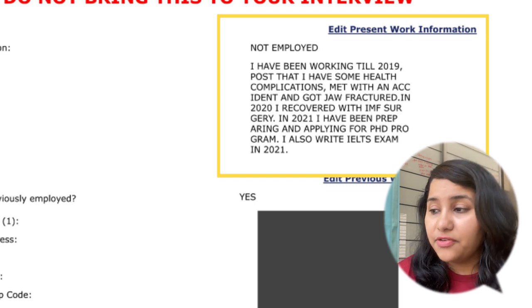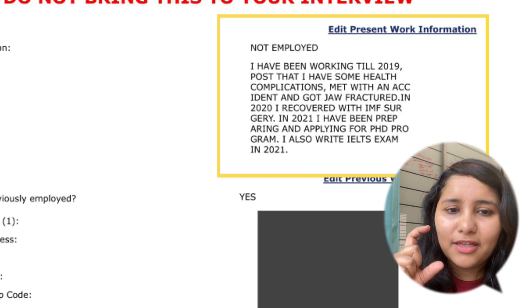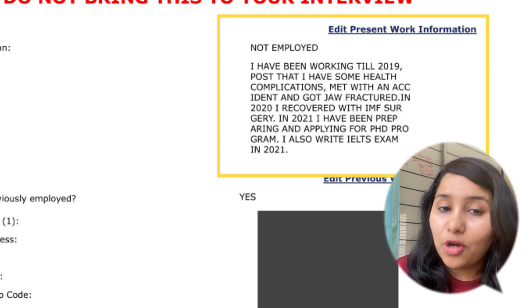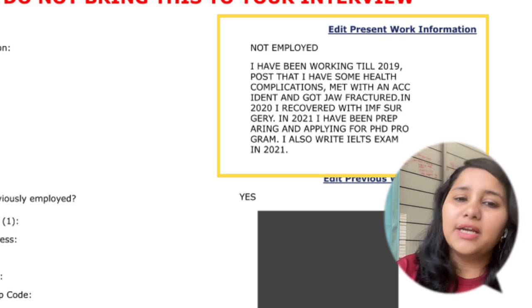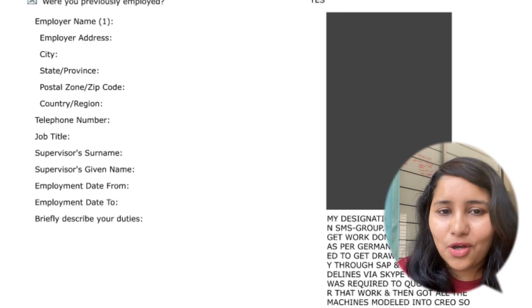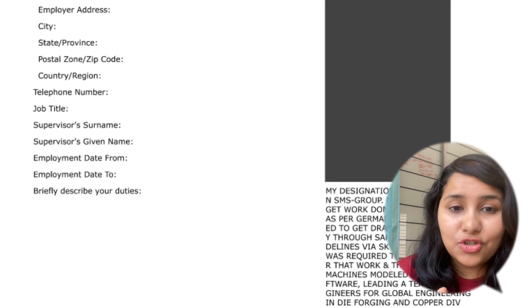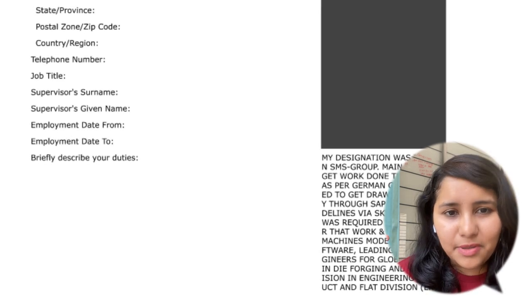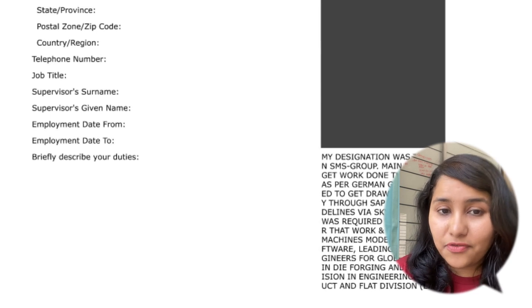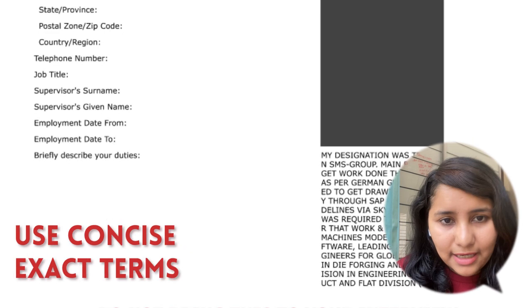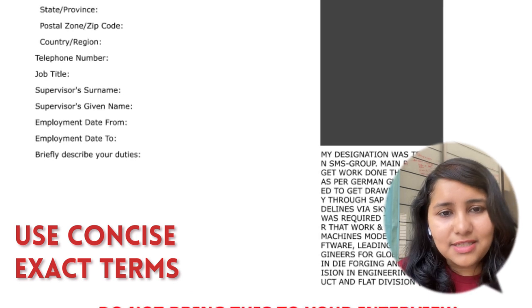Work details need to be filled really carefully. If you're not currently employed, the description box should explain what you have been doing. When the visa officer reads your work section, he should get a clear idea of your roles and responsibilities. Many times the work section is written extremely lengthy, and since the DS-160 doesn't allow formatting, everything just runs together. Structure your work description into three to four bullet points using concise, exact terms so the officer gets a really clear understanding of what you do.